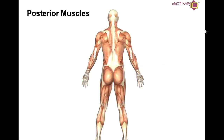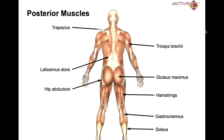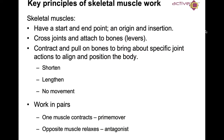Moving towards the posterior muscles — our back muscles — we have: latissimus dorsi (or lats), gluteus maximus, hamstrings, gastrocnemius (or calf), soleus, triceps brachii, hip adductors, trapezius, rhomboids, and erector spinae.